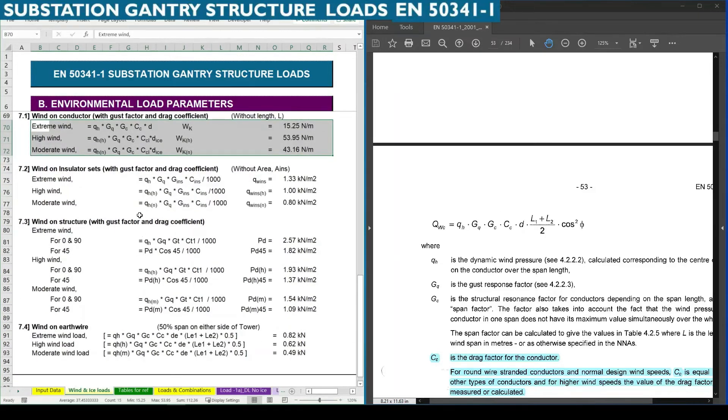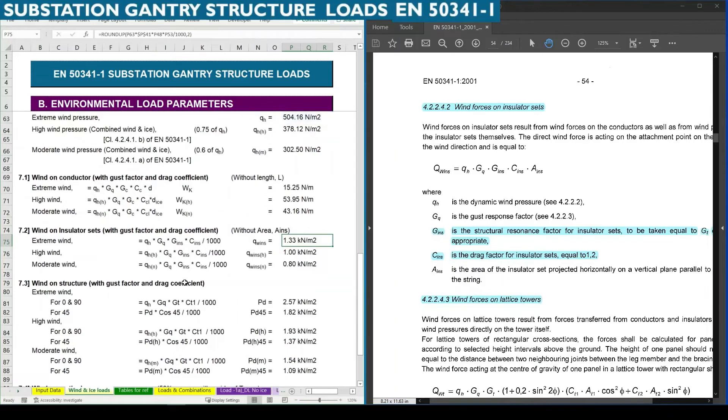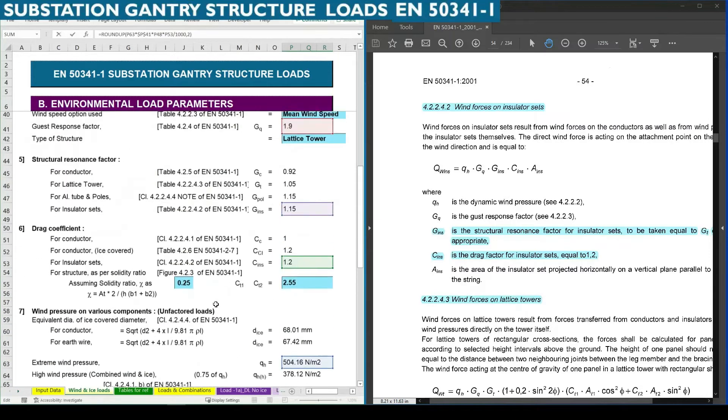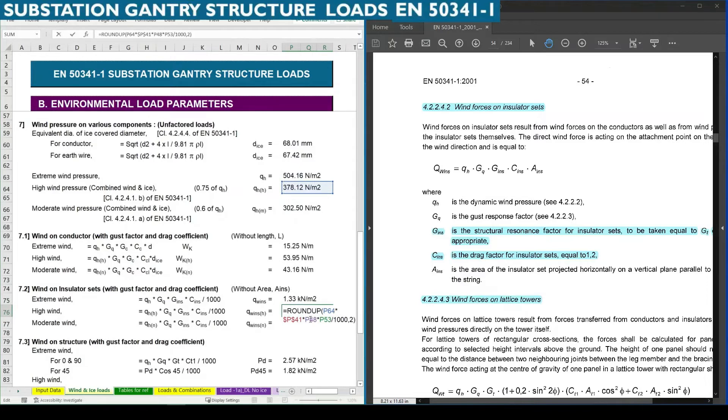Why does the value increase here? Because in high wind and moderate wind we need to consider the diameter as equivalent diameter of ice covered diameter. So D ice to be considered. If we consider D ice, it is 53.95 Newton per meter. Similarly for moderate wind, we need to consider D ice as the diameter of conductor. Finally we found the wind force per meter on conductor. Next is wind on insulator. For that this formula is on page number 54. Here you can see, except the area of the insulator, we are calculating the value. It means we are calculating the pressure by multiplying all the factors: gust factor, resonance factor, and drag factor with the wind pressure. Same for high wind pressure and moderate wind pressure.